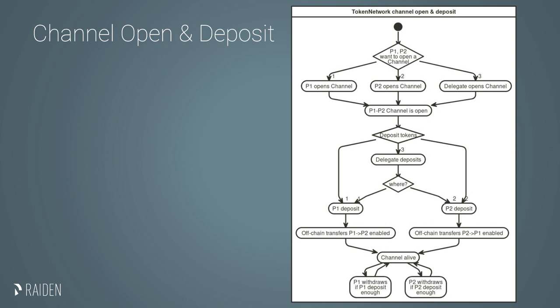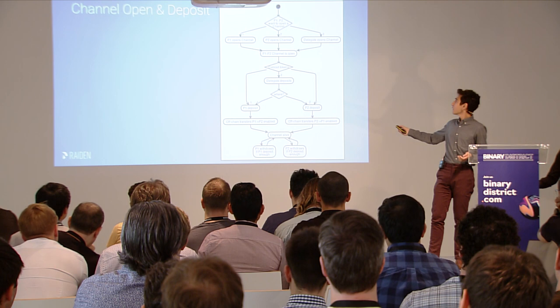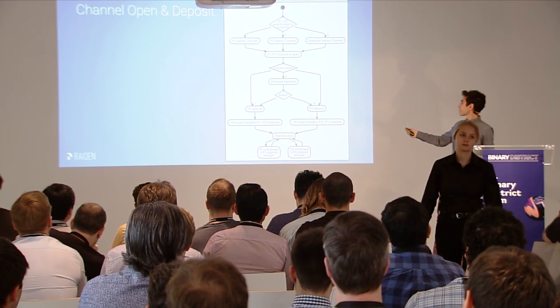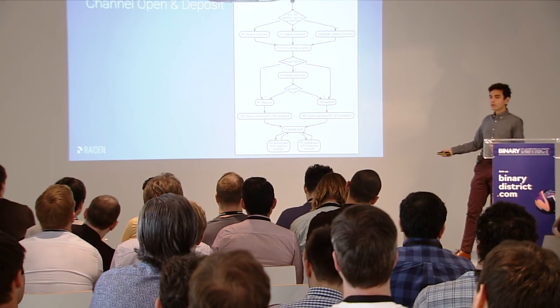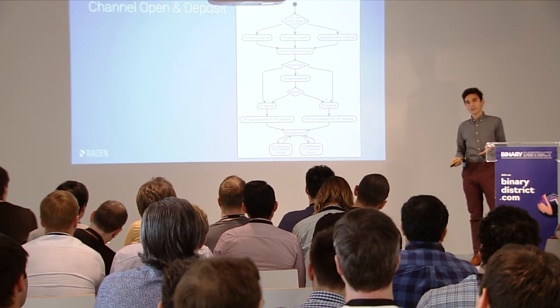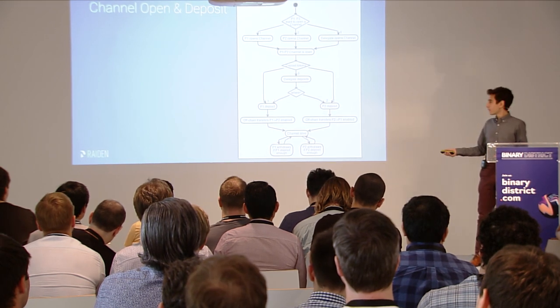Let's start by talking about channels. This is the channel lifecycle. We have two participants in one channel. Either of them can open the channel, or delegate the opening to a third person. Then the channel goes into the open state. People have to deposit — either via a delegate or either of the participants deposits. Then we can do off-chain transfers once the deposit is there. One nice thing is that as long as the channel is alive and not closed, people can actually withdraw without closing the channel, though it does require an on-chain transaction.